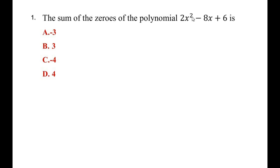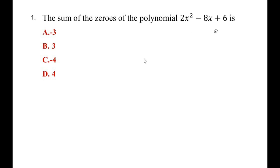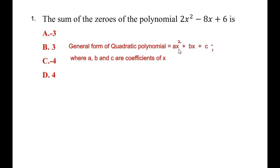We need to find out the sum of the zeros. Zeros are the values of x which, when substituted in this expression, make the entire expression equal to zero. We have to find the sum of those zeros, roots, or solutions. Let us write down the general form of the quadratic polynomial: ax squared plus bx plus c, where a, b, and c are coefficients or constants.